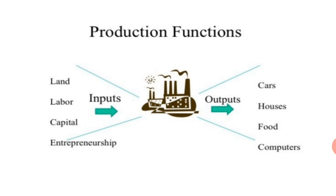We also studied about the production function. In the production function, there are two kinds of variables: input and output. Input factors can be variable or fixed. Input means land, labor, capital, and entrepreneurship or organization. Output means by using these inputs, you produce some commodity — that may be cars, houses, food, computers, daily required items, or electronic gadgets.